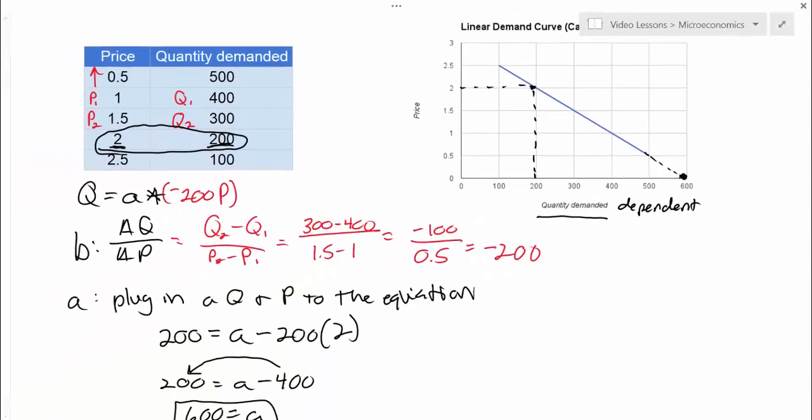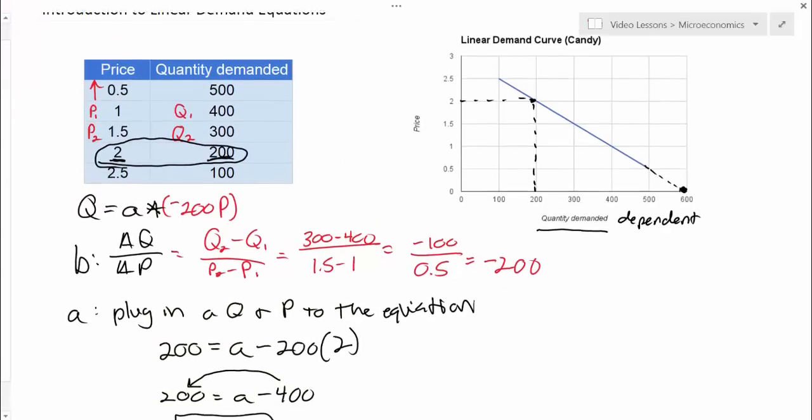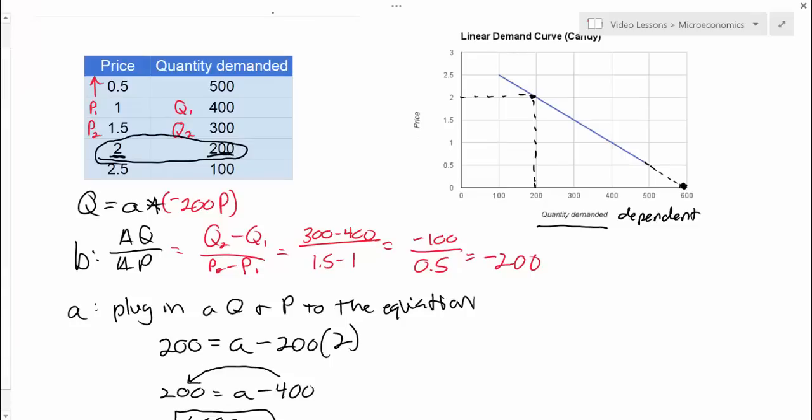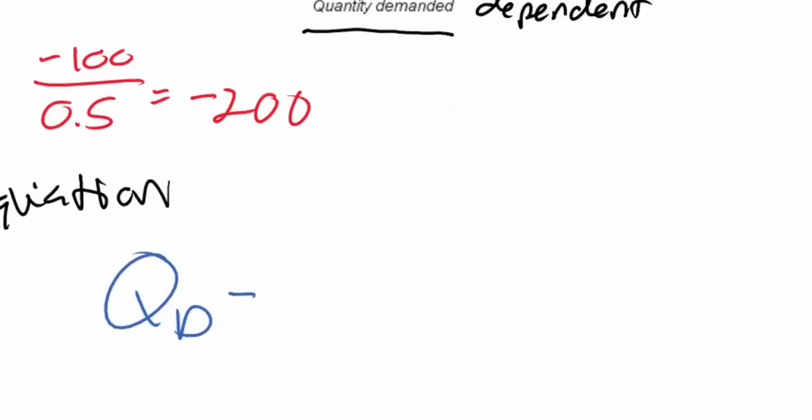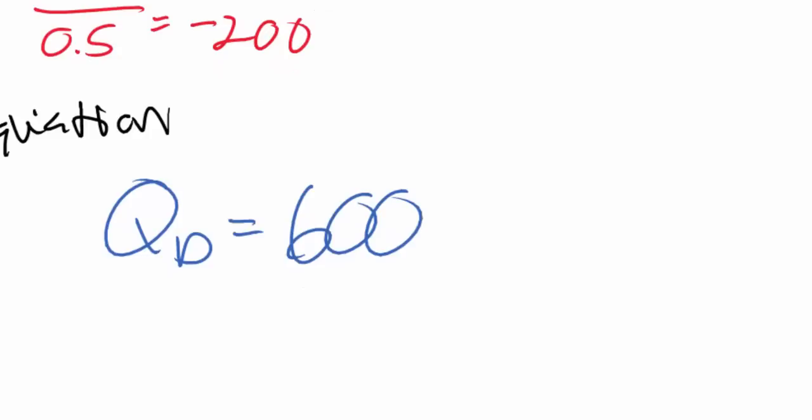Okay, so we now have our complete demand equation for candy based on the demand schedule and demand curve we see here. We know that the quantity demanded equals 600, that's the autonomous demand, the quantity that would be demanded if candy were free, minus 200, that's the inverse of the slope.